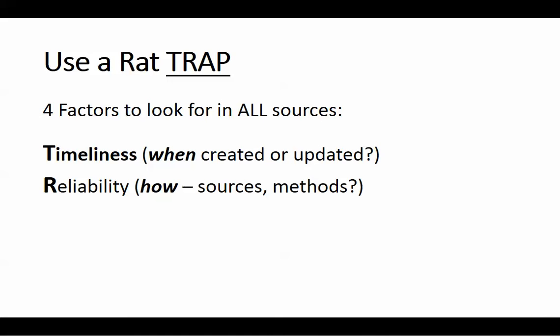The second thing is reliability — how is the information being presented? Two typical things to look for are sources. Just like when you write your paper you need to cite your sources, other information sources should cite where they got their information from as well. And if it's original research, they should document the methodologies used to gather data. If you don't see either of those, that may give you some pause.